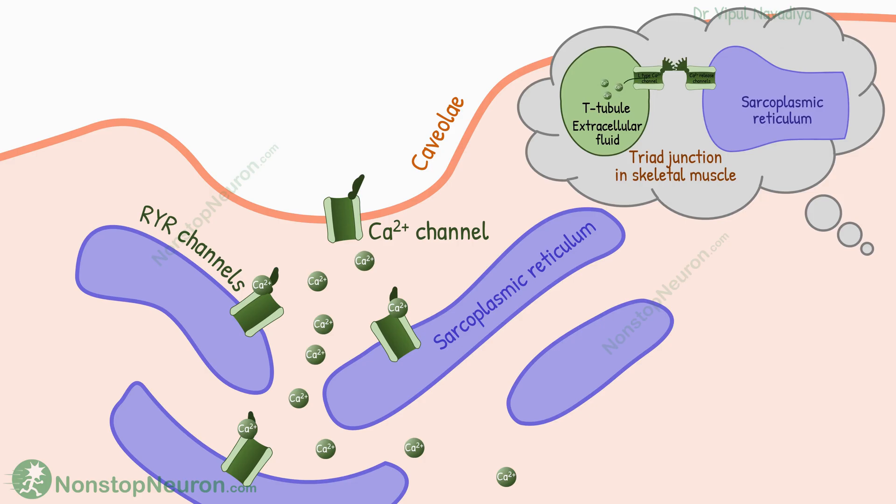This process in smooth muscles is analogous to what happens at triad junctions in skeletal muscles. There also, the entry of extracellular calcium from T-tubules increases calcium entry from closely located sarcoplasmic endoplasmic reticulum.